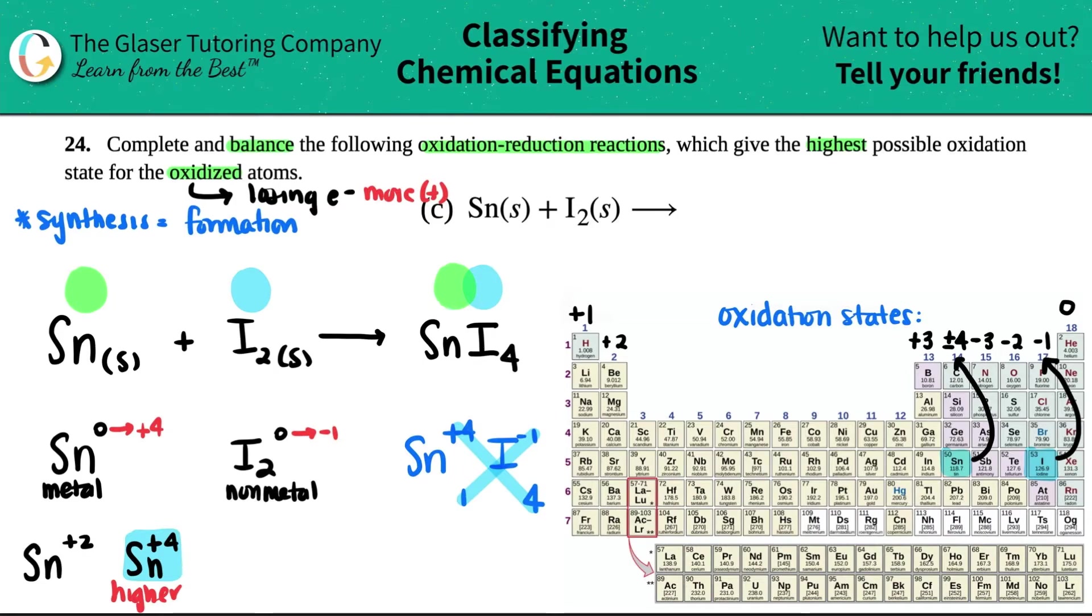Now solubility on this compound. Remember halides, that's your group 17 or 7A, fluorine, chlorine, bromine, or iodine. Nobody really cares about At. But halides in general are usually aqueous compounds, except when grouped with three atoms.